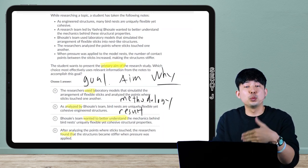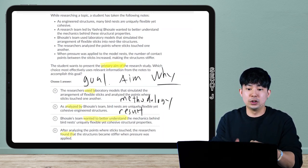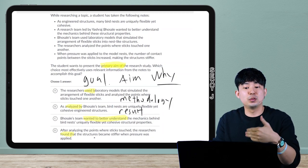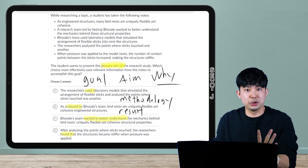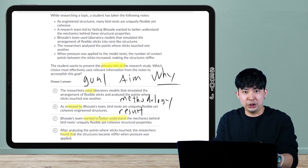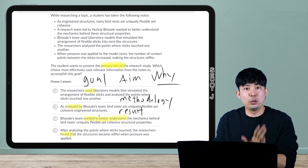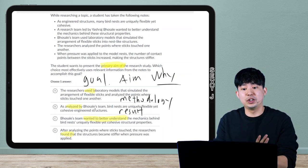A is again the methodology. That's just what they did. That is not the answer here. Look at B and D. That's the result. I don't want the results. So when I have goal, aim, motivation, that's what did they want to do before they did the experiment. It's C. They wanted to better understand.